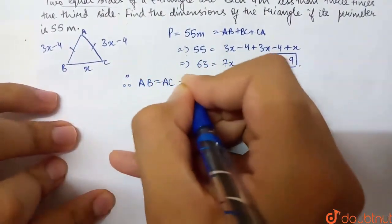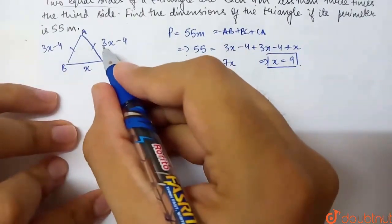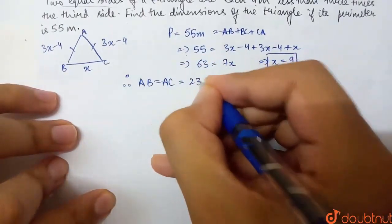So perimeter equals AB plus BC plus CA, which equals 55. Solving the equation, we get x equals 9. So 3 times 9 is 27, and 27 minus 4 is 23 meters.